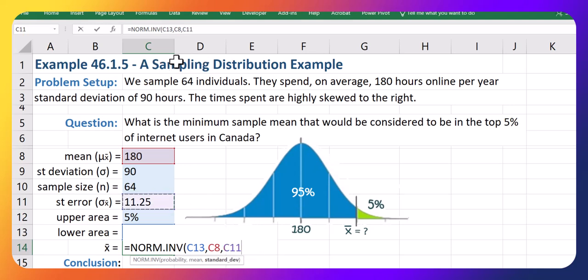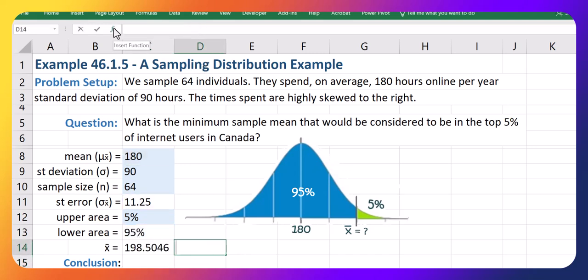Again, for sampling distributions, we use the standard error. That is the standard deviation for the sample means, which will be less spread out than the original data. And that gives us 198.50.